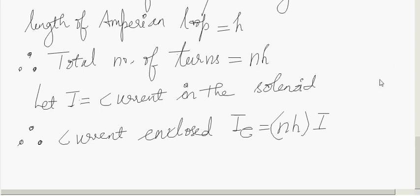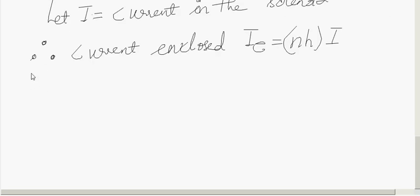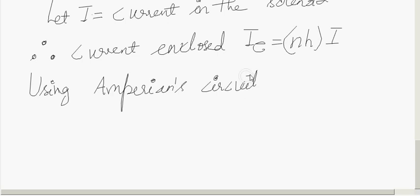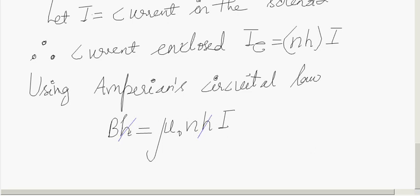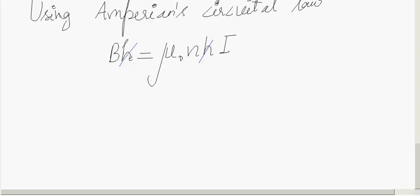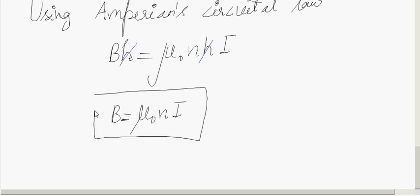Therefore, applying Ampere's circuital law, using Ampere's circuital law, we can write B into H will be equal to μ₀ times IE. What is IE? NH into I. Here H and H will get cancelled. Therefore, you get B is μ₀NI. This is the magnetic field inside the solenoid.